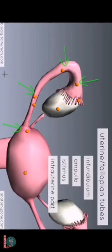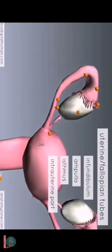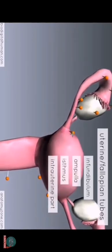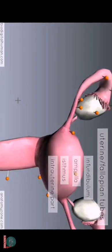The medial third of the uterine tube is called the isthmus. It's the narrowest part of the tube and it opens up into the uterus. Where the fallopian tube opens up into the uterus is called the intrauterine part — it's inside the uterus and opens up into the cavity of the uterus.